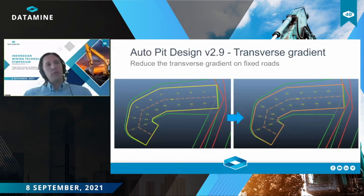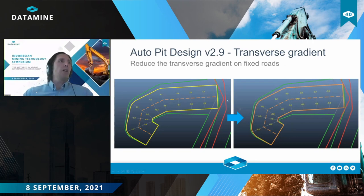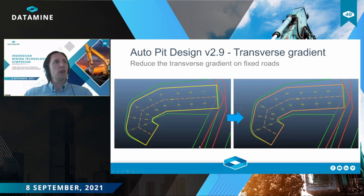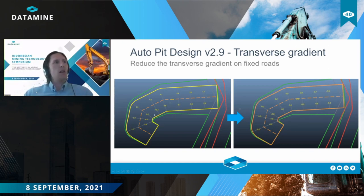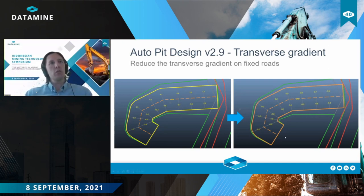What you saw in that previous video was an adaptive road. You can also define fixed roads where you define the center line. One of the improvements in version 2.9 was to improve the creation of fixed roads and improve transverse gradient — the gradient from one side of the road to the other. In some circumstances, when there was a tight bend, you could have a quite large transverse gradient, which is not practical. From version 2.9 onwards, the transverse gradients on tight bends are now pretty much zero, which is what we want.